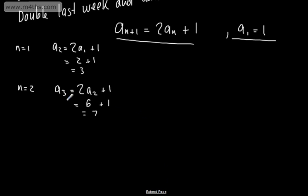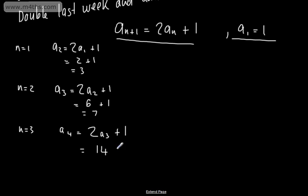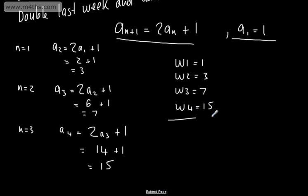We can see these terms are forming. When n is equal to 3, substituting in gives me a sub 4 — the fourth term or fourth week — which is 2 lots of the previous one, a3, plus 1. That gives us 2 lots of 7, which is 14, plus 1, equal to 15. So week 1 was 1, week 2 was 3, week 3 is 7, and week 4 is 15. This is an example of a recurrence relation — the next term is generated from the previous term.